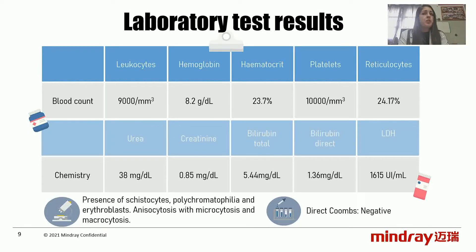With regard to chemistry performed on the Roche Cobas 6000 autoanalyzer, preserved renal function was observed. Increased total bilirubin at the expense of indirect fraction and markedly elevated LDH were found. The coagulogram showed no alterations. A direct Coombs test was performed and was negative. Given these results, we can conclude that we are in the presence of a thrombotic microangiopathy.